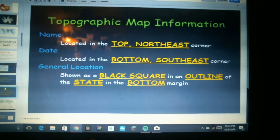And the general name of the location like Lake County or Fox Lake area, that kind of general location will be shown by a black square in the outline of the state at the bottom of the margin.